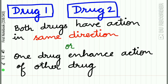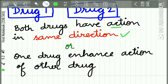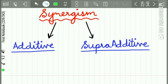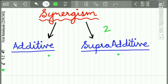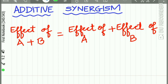In a synergistic drug pair, both drugs have action in the same direction, or the action of one drug is enhanced by the action of the other drug. Synergism is of two types: additive synergism and supra-additive synergism.